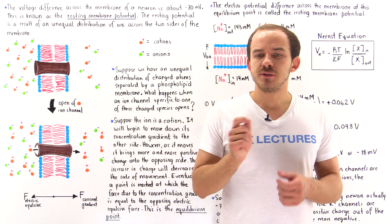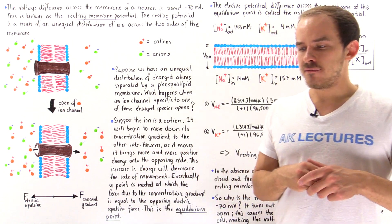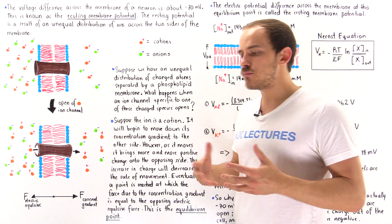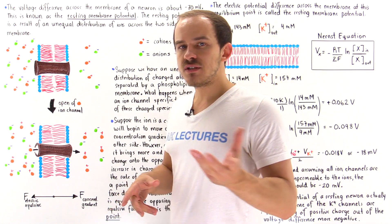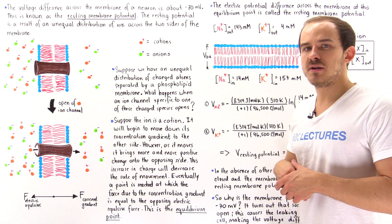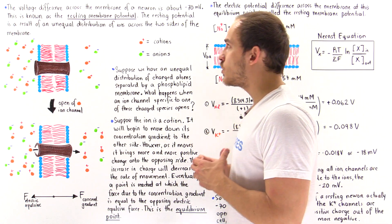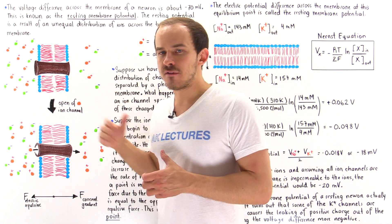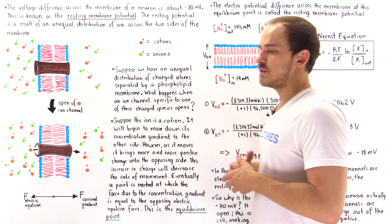If we measure the voltage difference — the electric potential difference between the two sides of the membrane of a resting neuron — we'll see the value is equal to about negative 70 millivolts. And this is what we call the resting membrane potential of that cell, the resting membrane voltage.